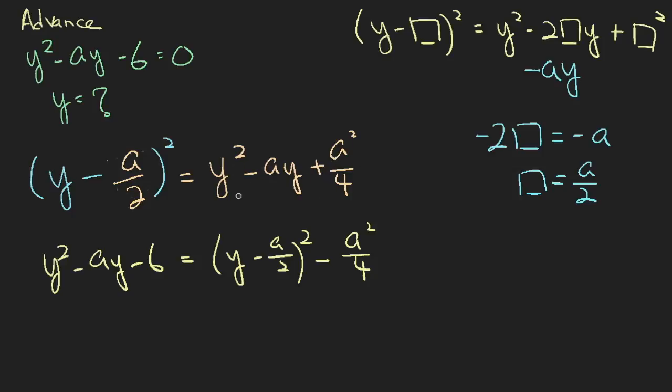So we are left with y squared minus a y, and then I have to put the minus six here, which will give me this term. If you don't believe me, you can always work it out yourself. Open up this bracket and minus a squared over four minus six, and you can see that you will get back this term.